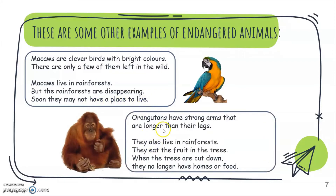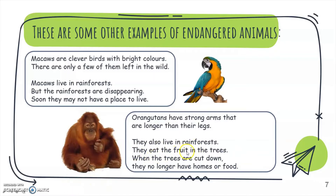Next, orangutans. Orangutans have strong arms that are longer than their legs. They also live in rainforests and eat the fruits in the trees. When the trees are cut down, they no longer have homes or food.